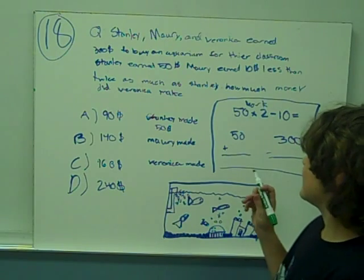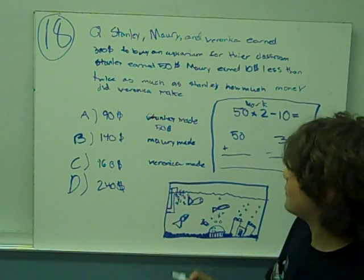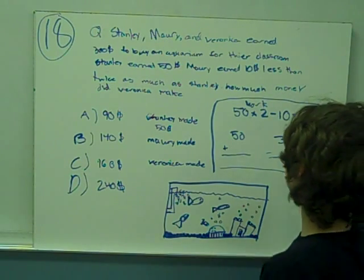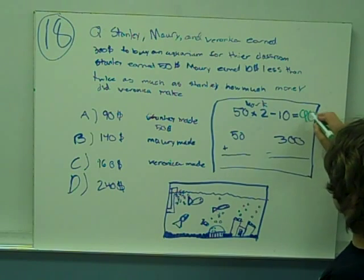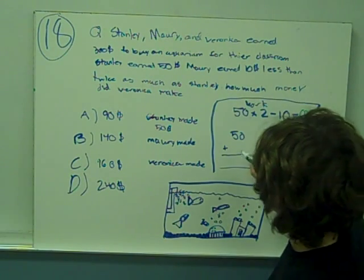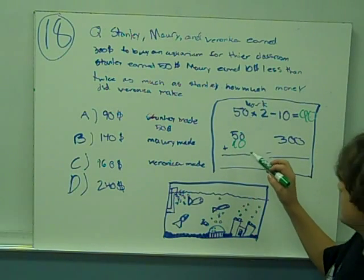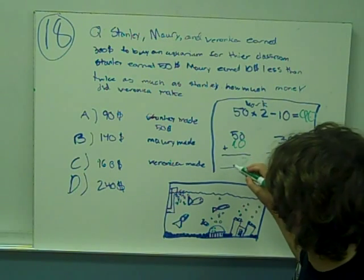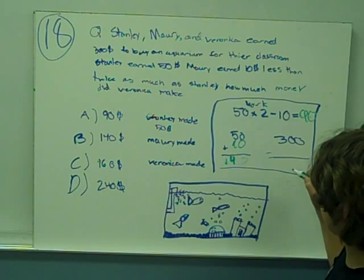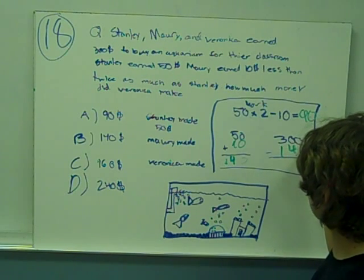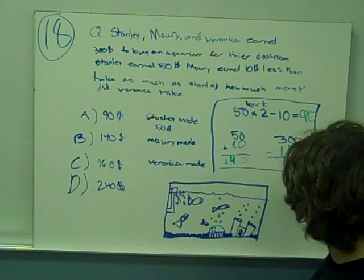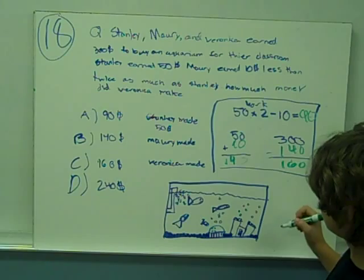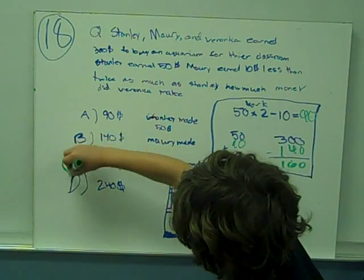So knowing that Stanley made $50, you would multiply that times two because it says twice, and then subtract ten, and you would get 90. So 50 plus 90 is 140. So you subtract 300 from 140, and you would get 160. So the answer is C, 160.